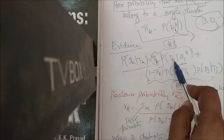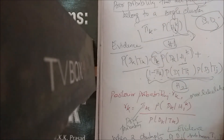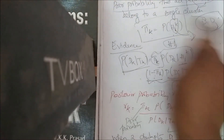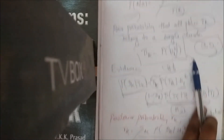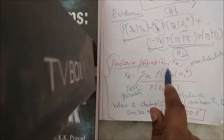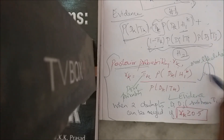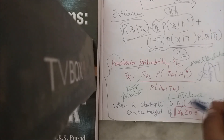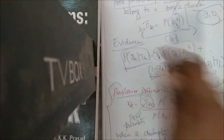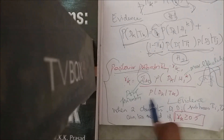Putting it together: the evidence denominator is p(dk | H1k) plus p(di | ti) × p(dj | tj) × (1 − πk). This gives us the denominator p(dk). The conclusion: we calculate rk, the posterior probability, to decide whether two points come from the same probability distribution model and can therefore be merged.